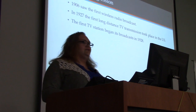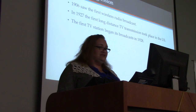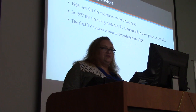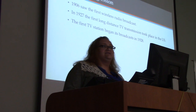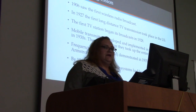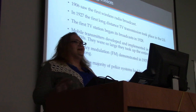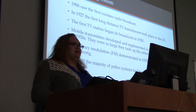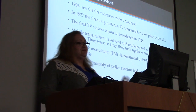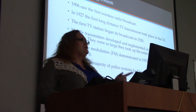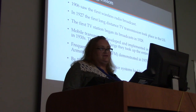In 1927, the first long-distance TV transmission took place in the United States, and just a year later the first television station, WRGB, began broadcasts from a General Electric facility in Schenectady, New York — it still broadcasts today. By the 1930s, mobile transmitters were implemented in police vehicles, so large they took up the entire trunk. In 1935, Edwin Armstrong demonstrated frequency modulation, and by the 1940s all police transmitters had converted to FM, though FM didn't become commercially competitive with AM until the 1960s.